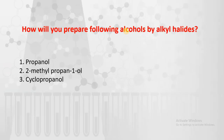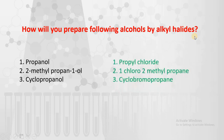This is another type of question: how will you prepare the following alcohols from alkyl halides? The alcohols are propanol, 2-methylpropan-1-ol, and cyclopropanol. How are these alcohols prepared from alkyl halides? The answers are propyl chloride, 1-chloro-2-methylpropane, and cyclopropyl bromide.